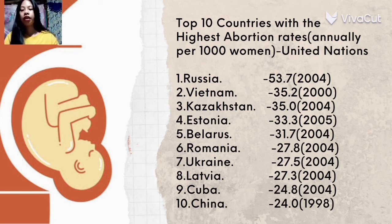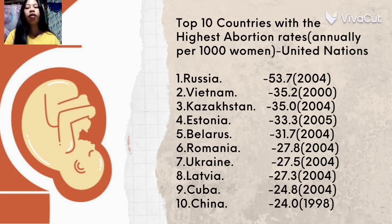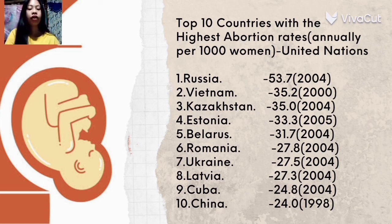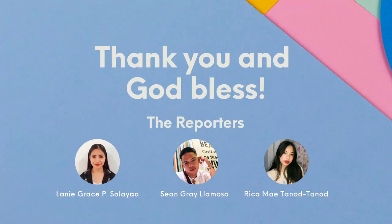These are the top 10 countries with the highest abortion rates: Russia, Vietnam, Kazakhstan, Estonia, Belarus, Romania, Ukraine, Latvia, Cuba, and China. And that's all. Thank you for listening.